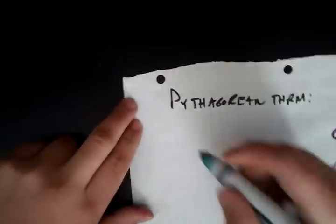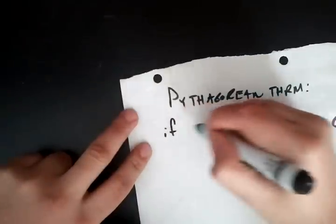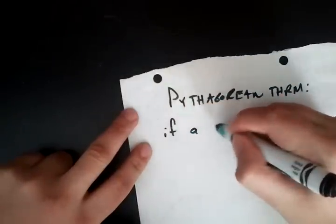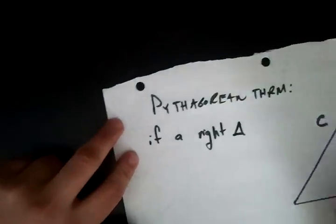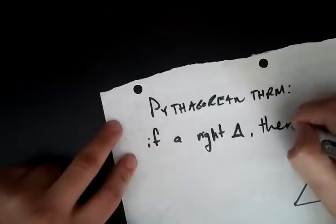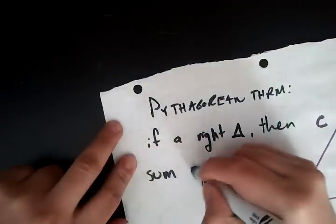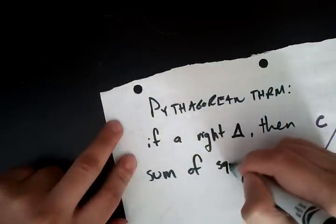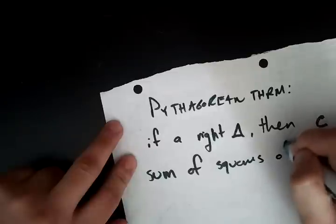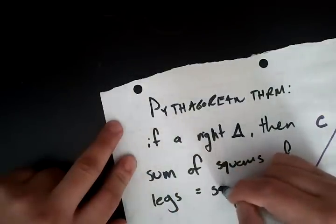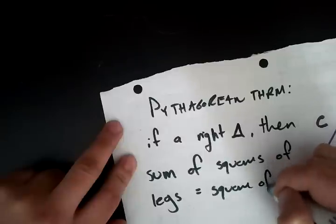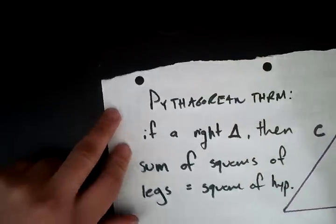Pythagorean theorem states that if you have a right triangle, then sum of the squares of legs equals square of the hypotenuse.